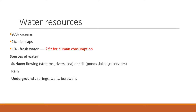Coming to the sources of water, we have surface water, rain water, and underground water. For surface water we have streams, rivers, sea, and for still water we have ponds, lakes, and reservoirs, along with rain and underground water to our benefit.